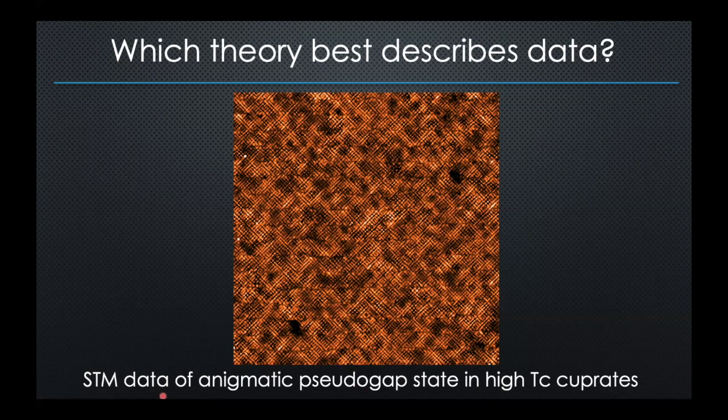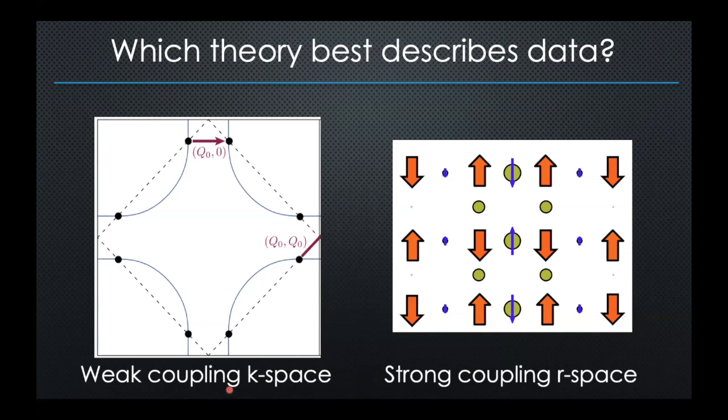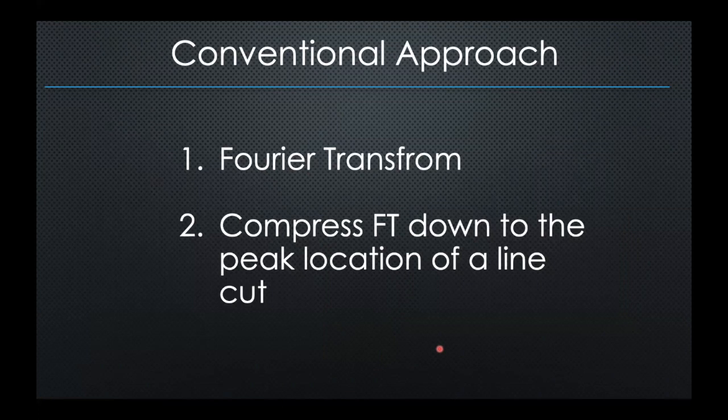This is STM data on the pseudo-gap state of high-Tc cuprates. The two competing perspectives are: should I think about these modulations as coming from Fermi surface instabilities, or should I think of it as a strong-coupling real-space picture, starting from local moments and doped holes? The conventional approach to looking at this kind of modulation data is to do a Fourier transform and try to compress it down to some peak location of a line cut.